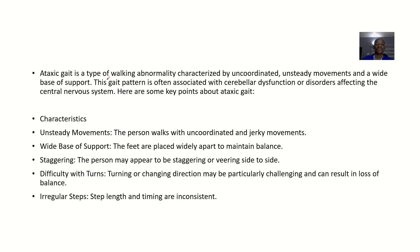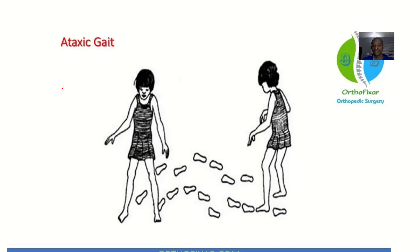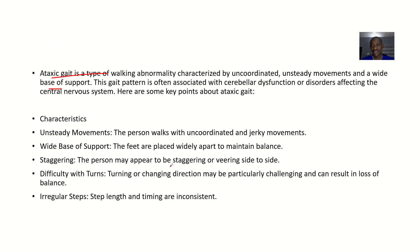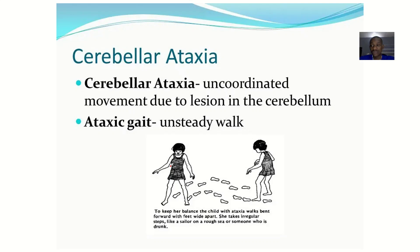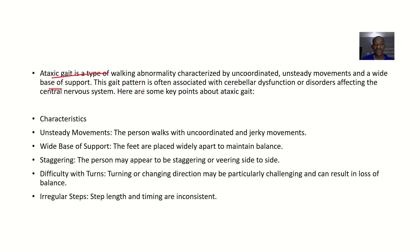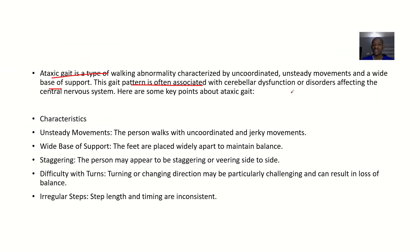For the definition, ataxic gait is a type of walking abnormality characterized by uncoordinated, unsteady movements and a wide base of support. You can see how this person is putting one leg here and leaving a wide space to put the other leg — there's a wide base of support. The patient is walking with their legs open. This gait pattern is often associated with cerebellar dysfunction, which is why it's called ataxic gait or cerebellar gait.